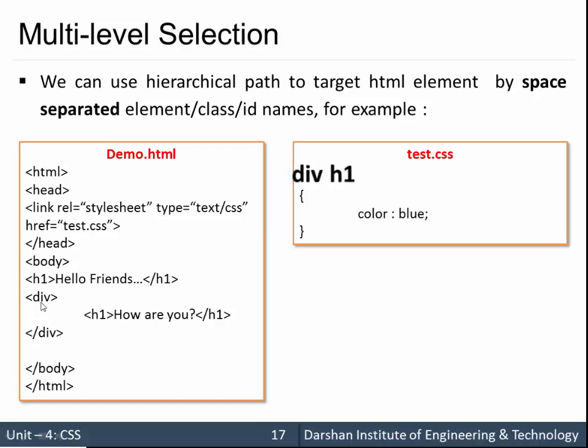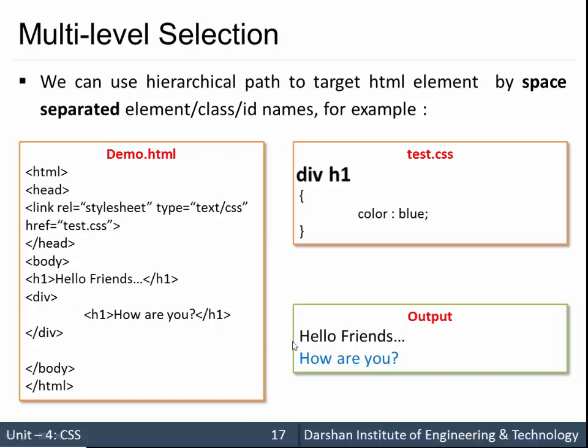So the output will be this. First h1 is not colored blue and second is colored blue. Same with space separated element, class, or id, anything. We can use combinations of them also. Some element, some class, some id, but that must be space separated.